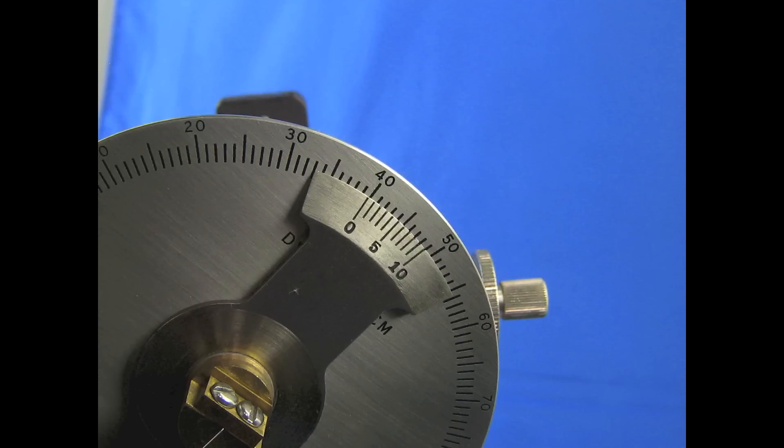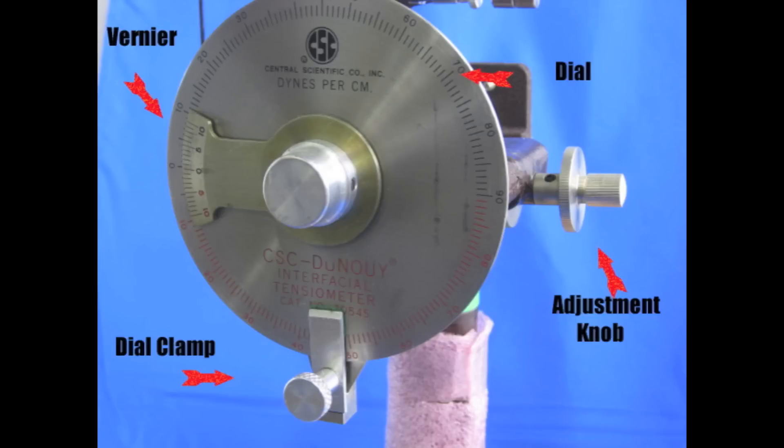This process changes the arm length and the zero point. You now must re-zero the tensiometer and redo the calibration steps.